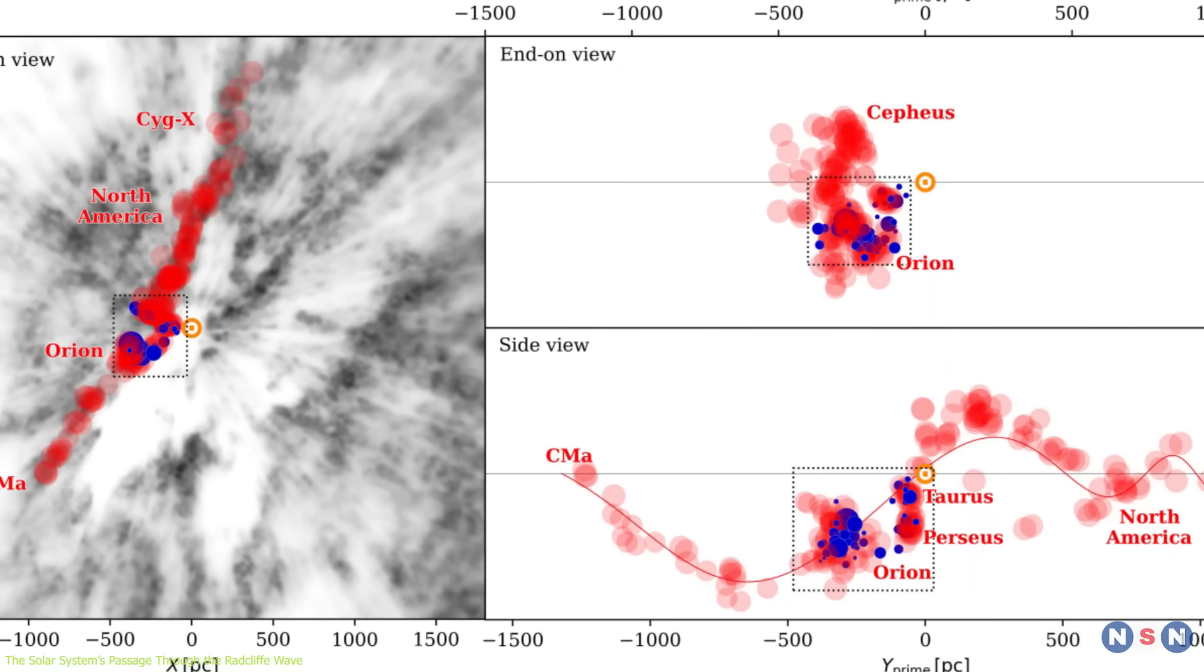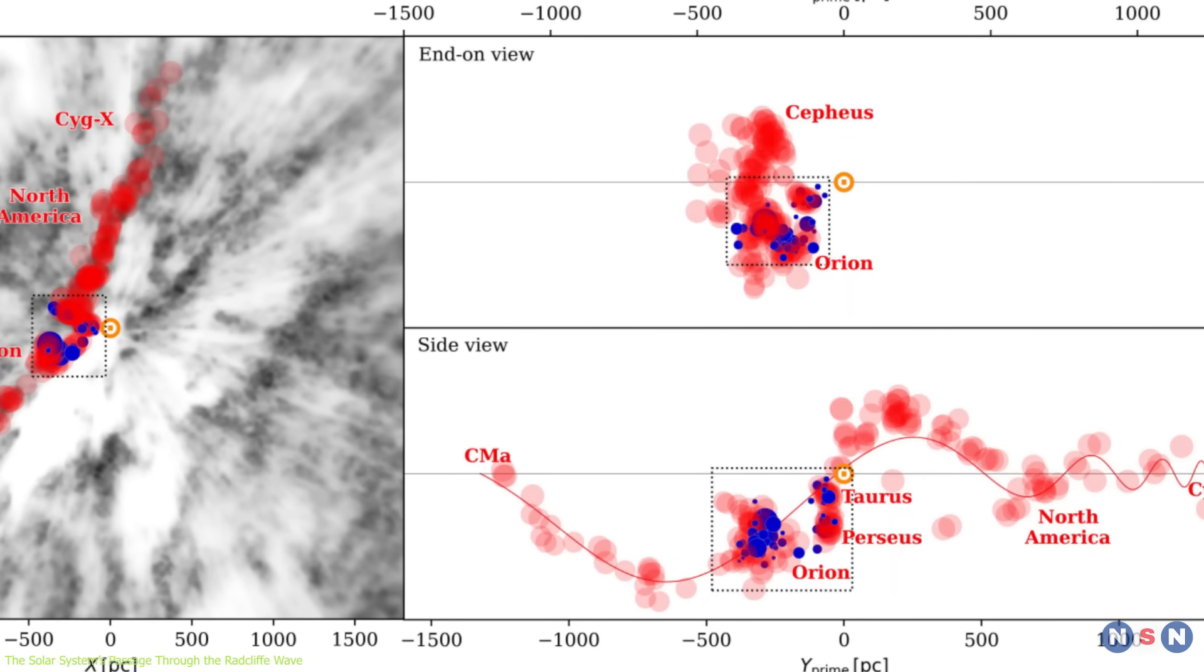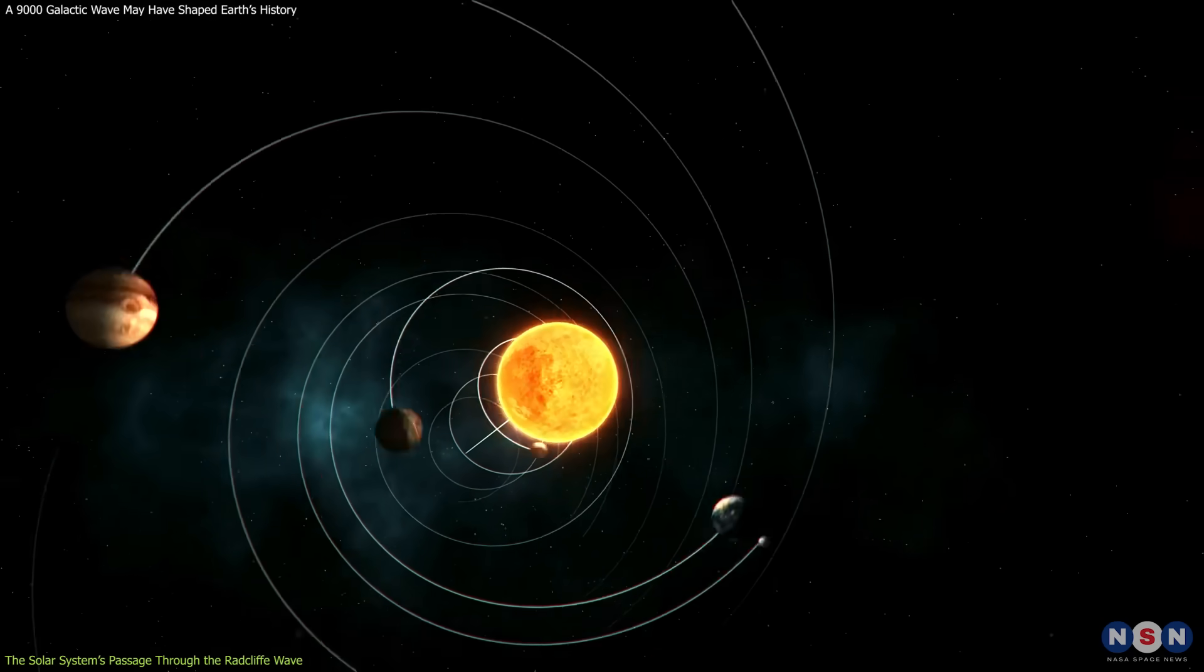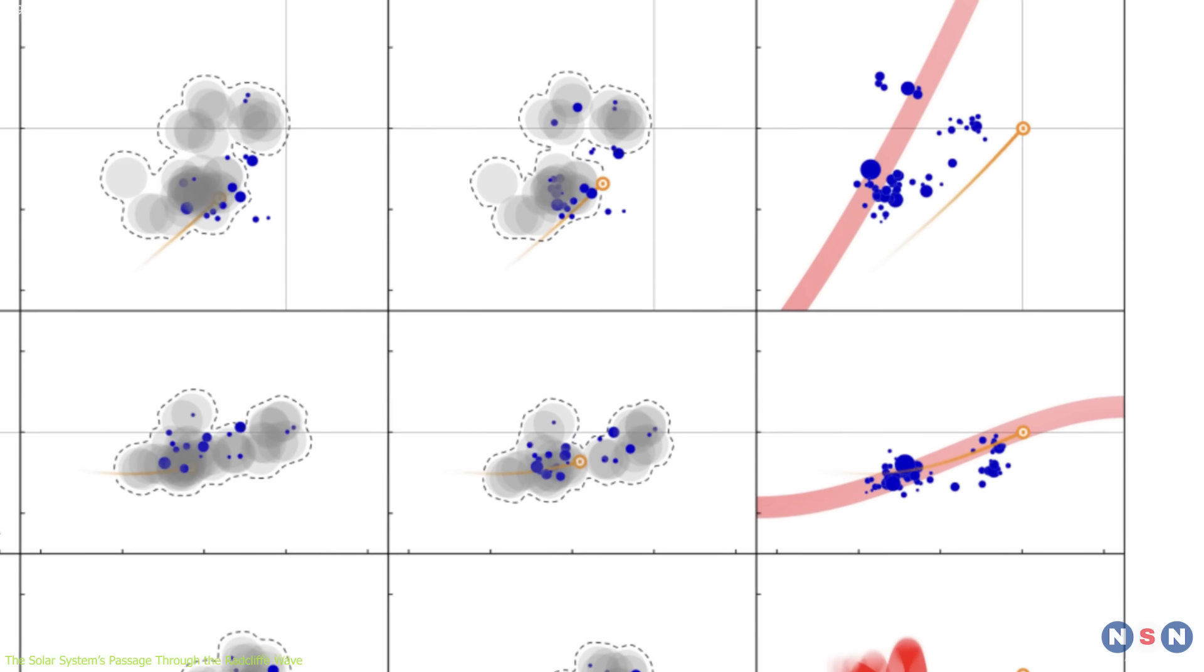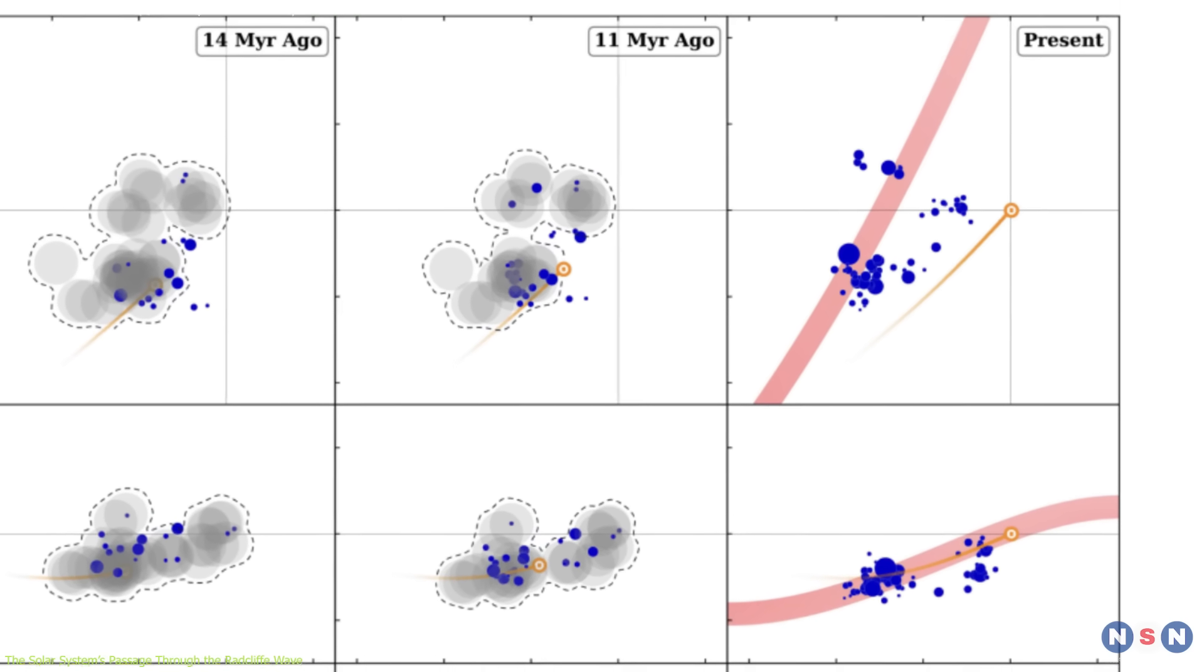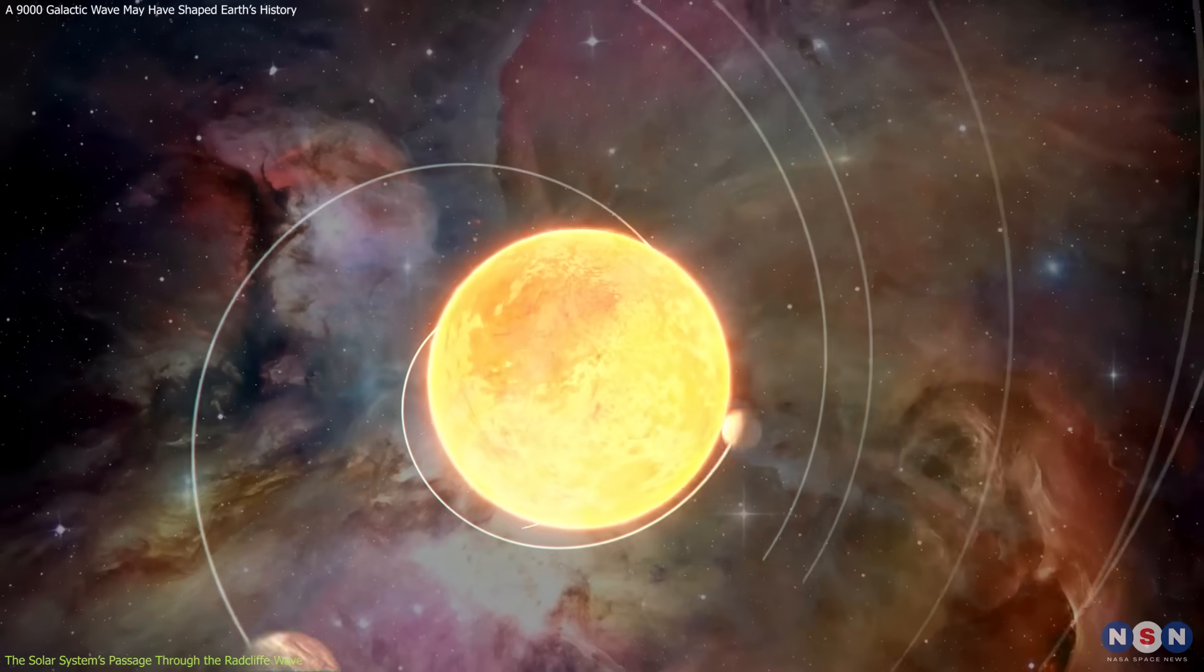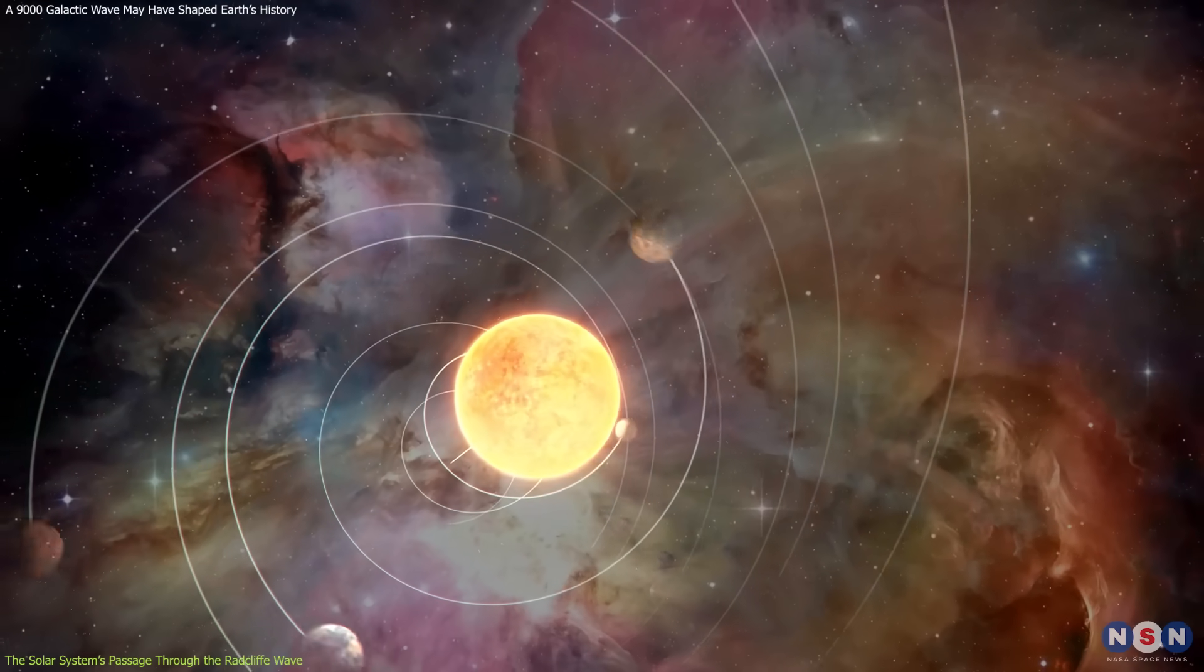Scientists traced the movement of star clusters within the Radcliffe Wave and compared them with the reconstructed past trajectory of the solar system. The analysis showed that during the Miocene epoch, our solar system was within this dense region, possibly altering the conditions in the interstellar medium around it.